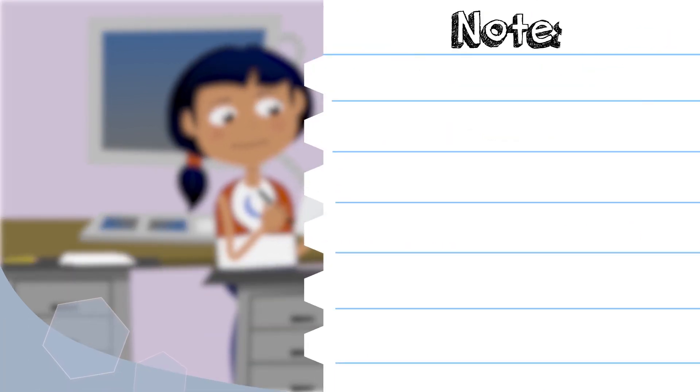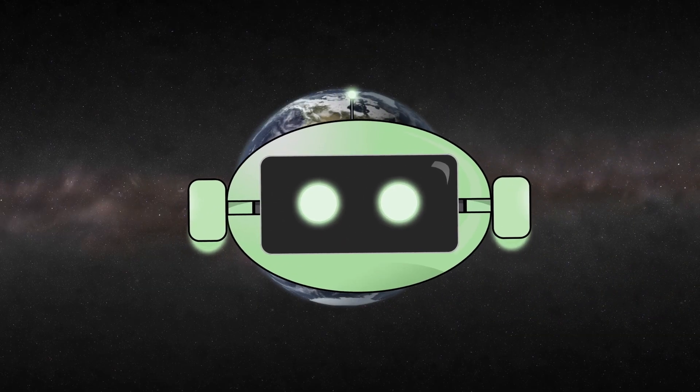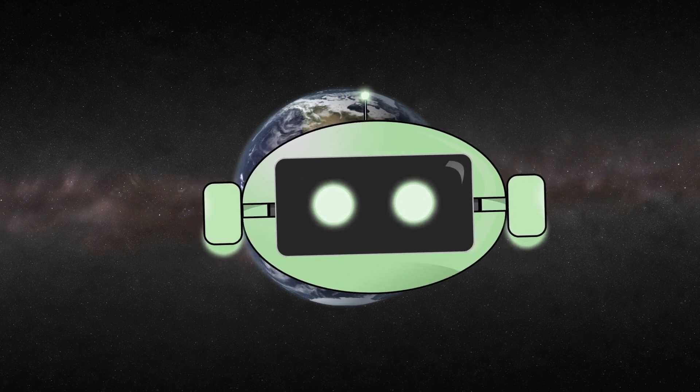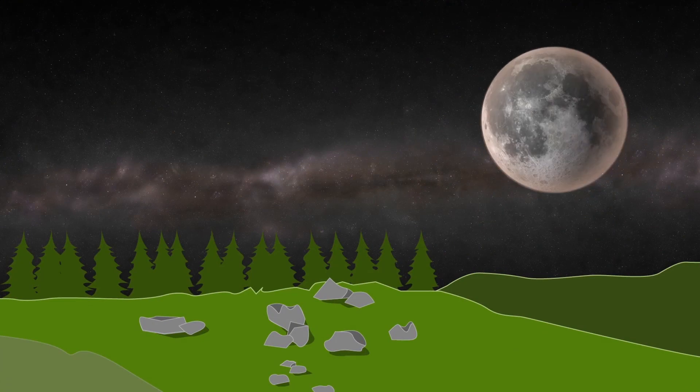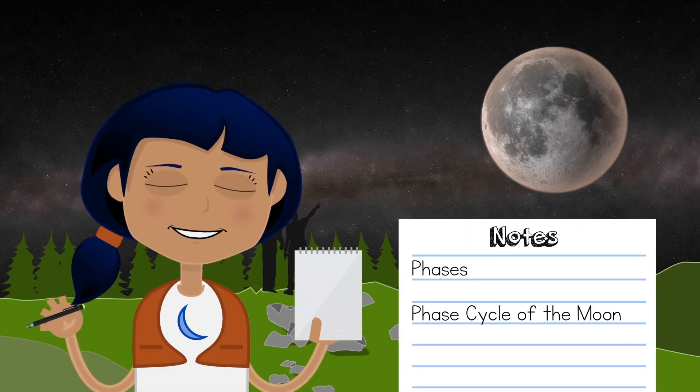Now let's give our fellow scientists time to take some notes. Press pause to take notes on the basic characteristics of the Moon and how it was formed. Press play again when you're ready. Now let's look at what we can actually see from Earth. Yeah, like why is the Moon always changing shapes? Well, bud, it's not actually changing shapes. What changes is what we see. What does that mean? I'll tell you, bud. Scientists, get your notebooks ready to take notes on the different phases of the Moon.